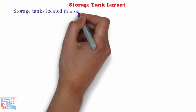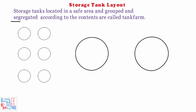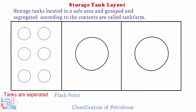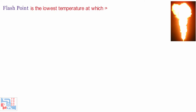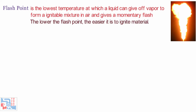Storage tanks located in a safe area and grouped or segregated according to their contents are called a tank farm. Tanks containing hydrocarbons should be separated according to the flashpoint. The flashpoint of any petroleum liquid is the lowest temperature at which a liquid can give off vapor to form an ignitable mixture in air and gives a momentary flash on application. The lower the flashpoint, the easier it is to ignite the material. Petroleum products are classified according to their closed cup flashpoints.